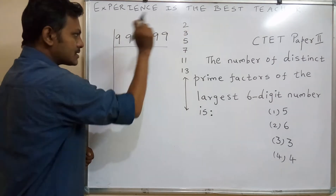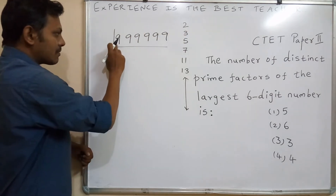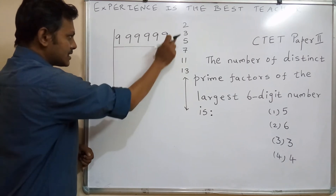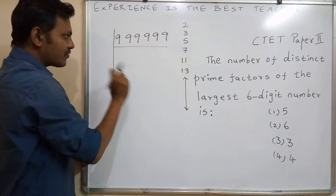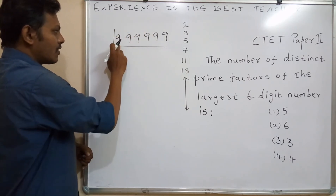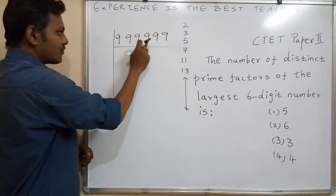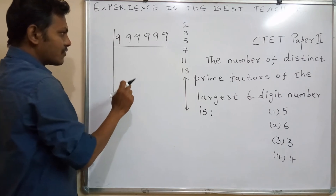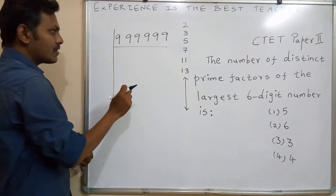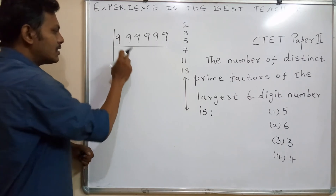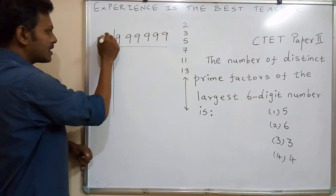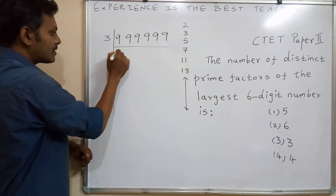The next prime number is 3. The sum of the digits of 9,99,999 is 54 — six nines give 54. Since 54 is in the 3 table, this number is divisible by 3.